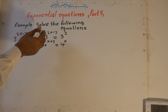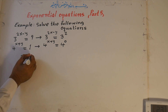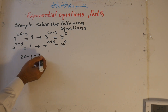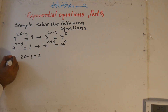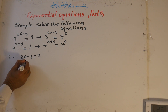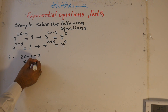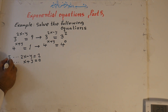Now the bases of both equations are equal, so we can equate the exponents. The first equation becomes: two x minus y equals two. The second equation becomes: x plus y equals zero.